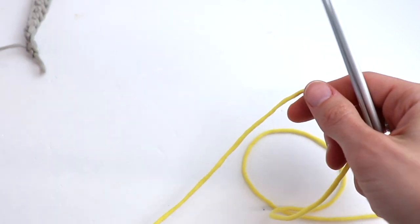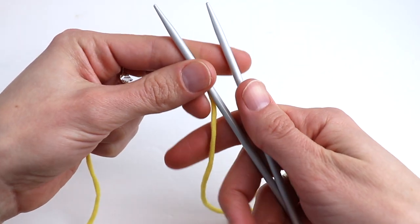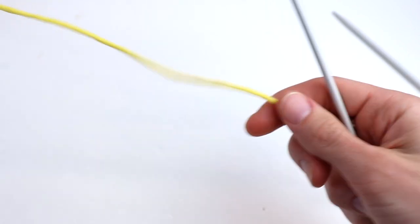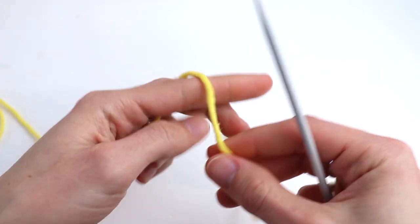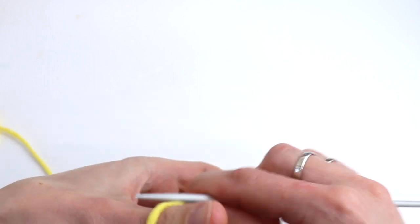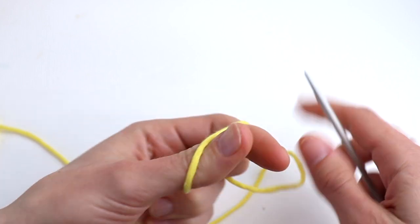This cord has only one row to repeat and it's really easy. Cast on two stitches.